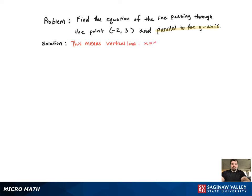So now all we need to do is solve for a. If we just use our other piece of information, the point negative 2, 3, we get x equals negative 2.